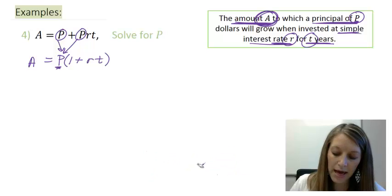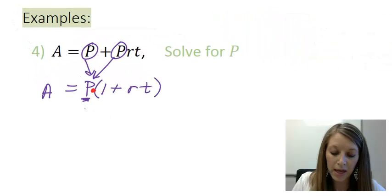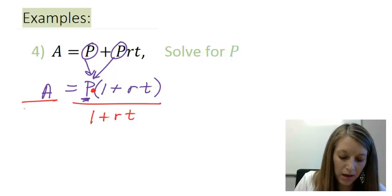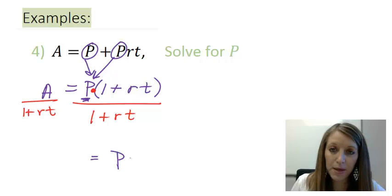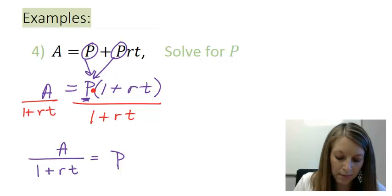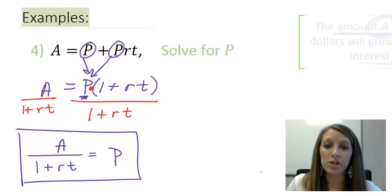Okay, so to completely isolate my variable, then, I need to do my opposite operation. This is multiplication, so to get rid of everything else, I divide by it. If I do it on one-hand side, I have to do it on the other. That gives me P isolated, where my amount is divided by 1 plus my rate times my time. And so, that will tell me how much principle I started out in this account in the first place.